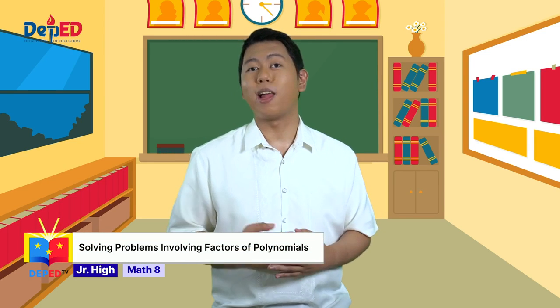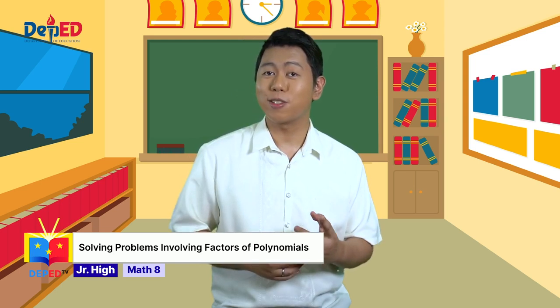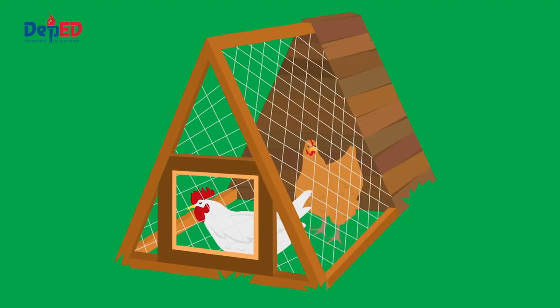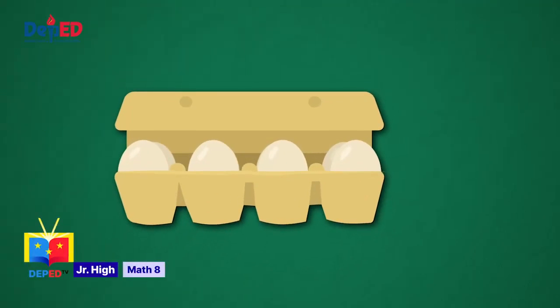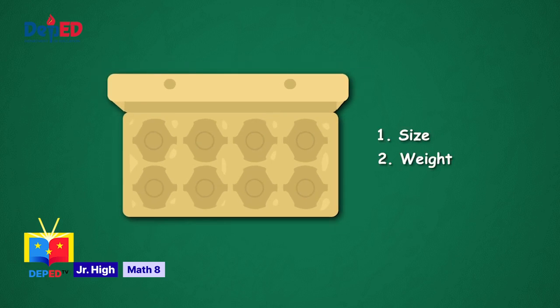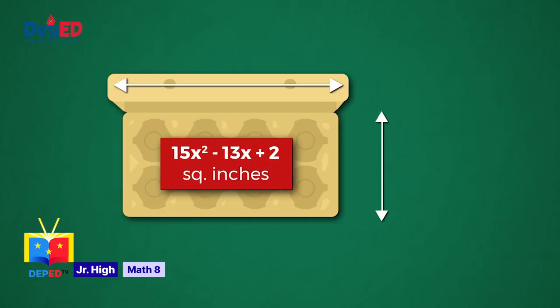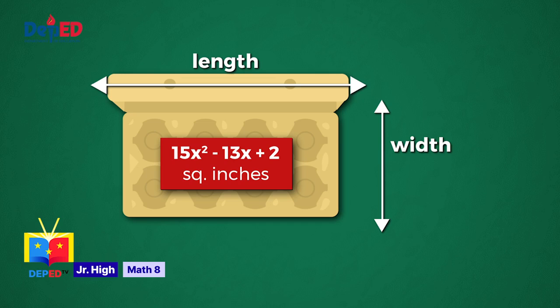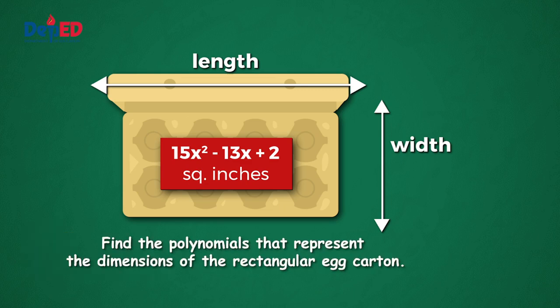Agriculture does not only include plants and crops. It also involves livestock or produce from animals like eggs from chickens or poultry. For example, we use or make egg cartons considering the size, the weight, and the number of eggs to be put inside to have efficiency in collection. Let us say that the area of the rectangular egg cartons that this farm uses is 15x squared minus 13x plus 2 square inches. We are given a polynomial with three terms.